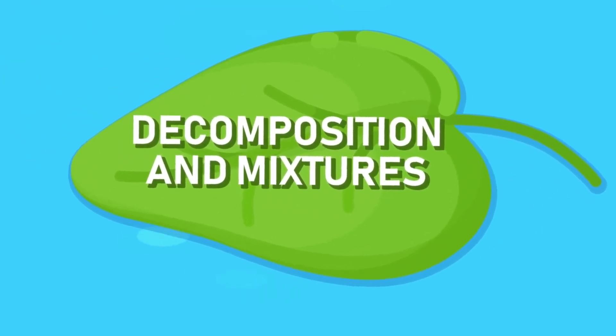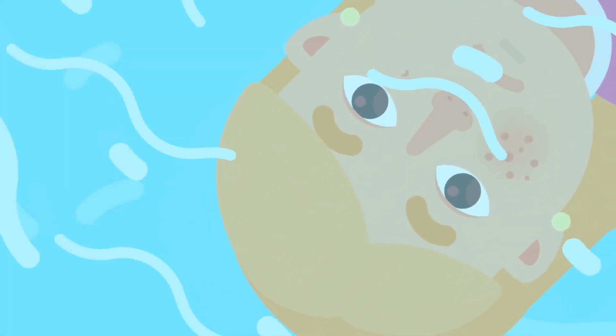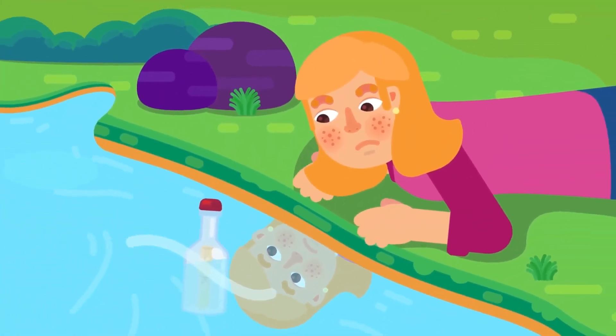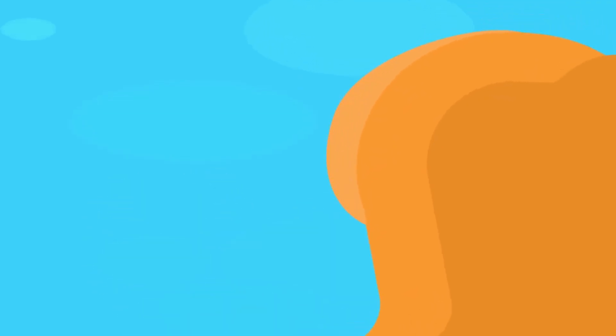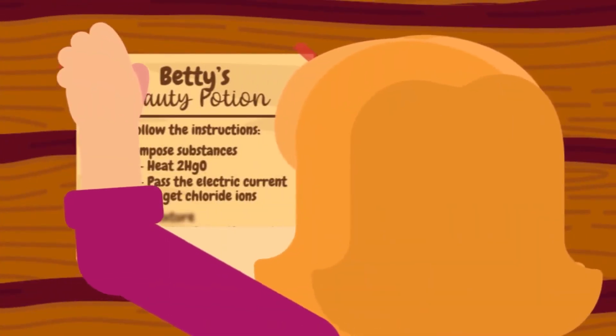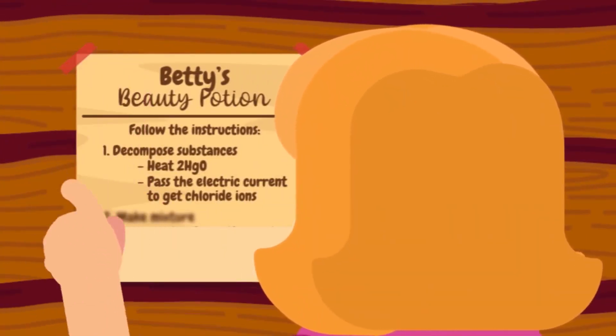Decomposition and mixtures. There are two kinds of chemical processes that can break compounds into simpler components. These are called thermal decomposition and electrolysis.